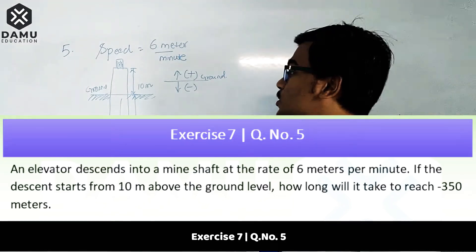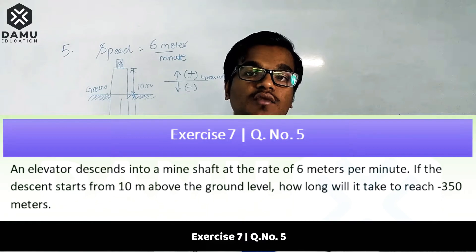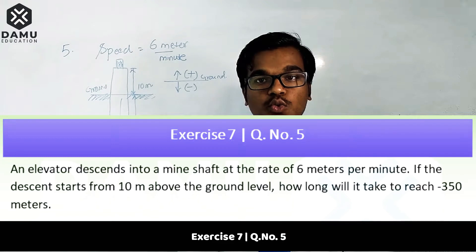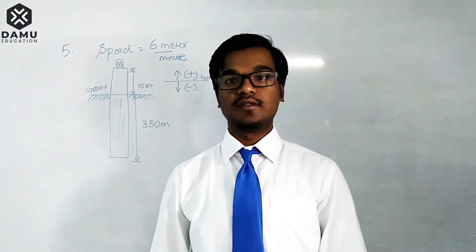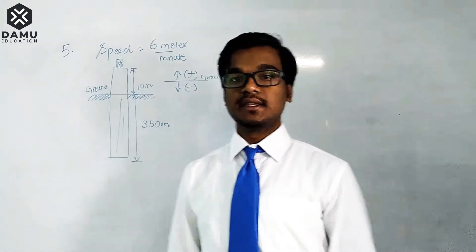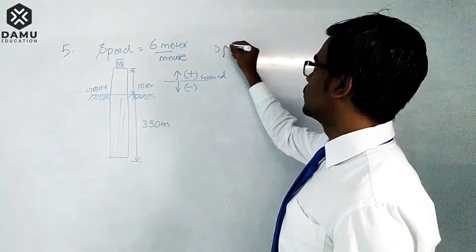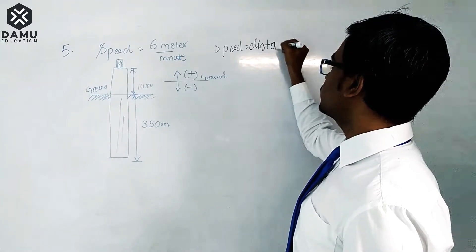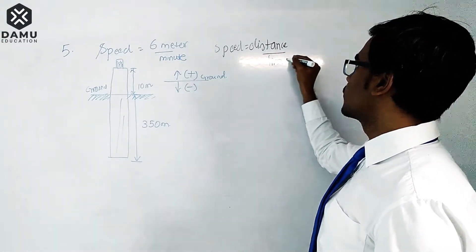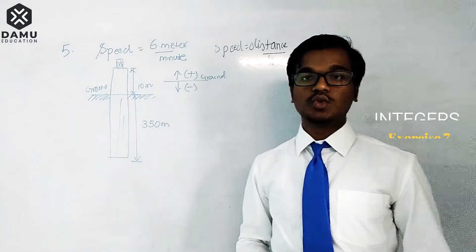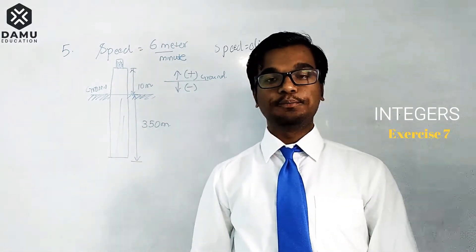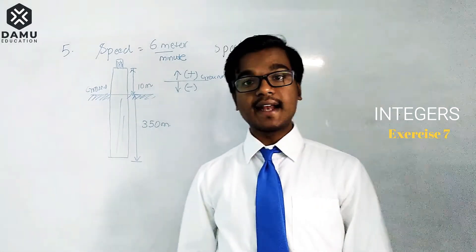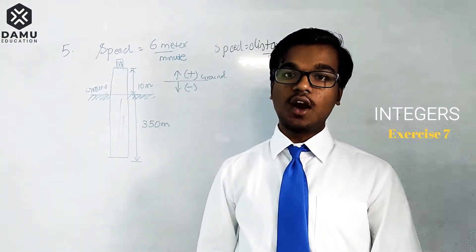We are going to convert six meters per minute into meters per second format. The formula is: speed equals distance divided by time. So we will use this formula to solve the problem. The elevator starts descending into a shaft from above the ground level at a height of 10 meters.